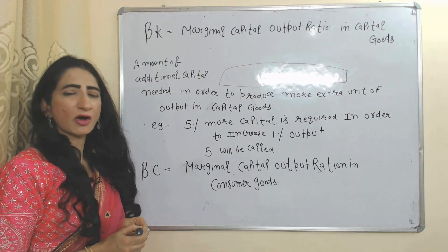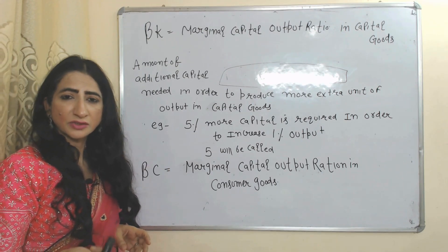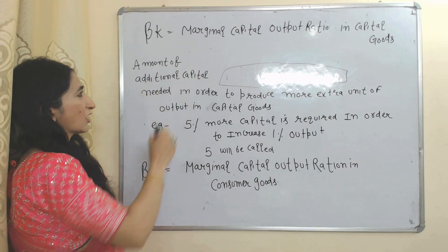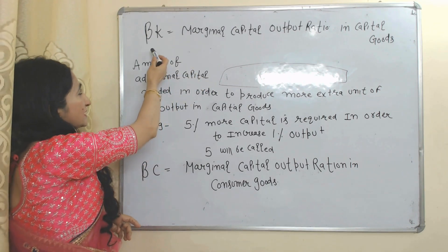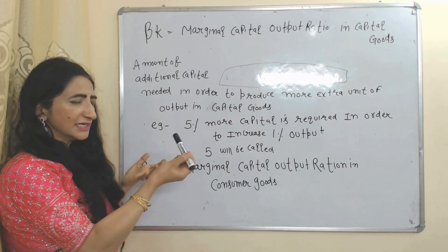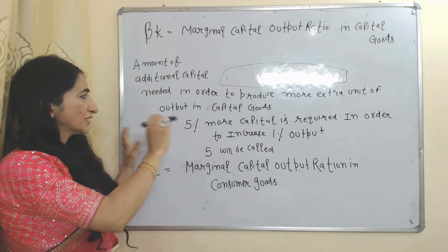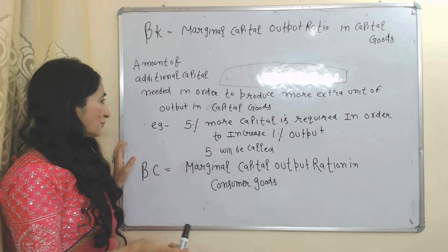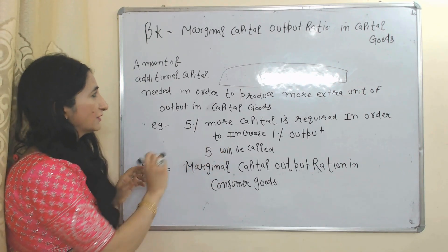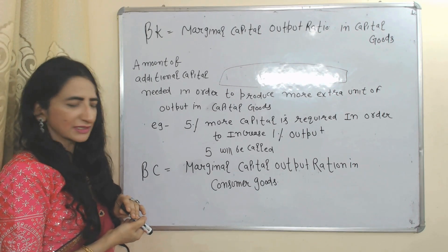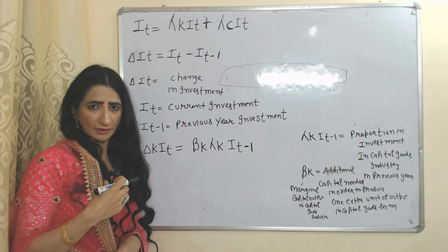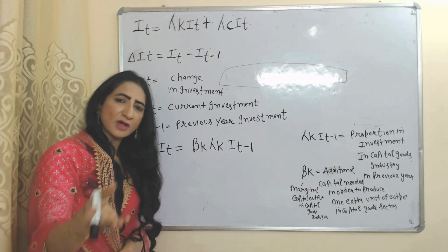Now we will see the marginal capital-output ratio in both sectors — the consumer goods sector as well as the capital goods sector. Beta k represents the marginal capital-output ratio in the capital goods industry, meaning the additional capital needed to produce one extra unit of output in the capital goods industry. For example, if 5% more capital is required to increase output by 1%, then 5 is the marginal capital-output ratio in the capital goods industry. Beta c is the marginal capital-output ratio in the consumer goods industry.